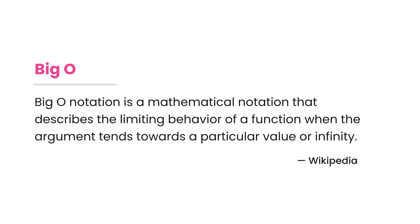So what is this big O all about? Well, let's start with the classic definition on Wikipedia. Big O notation is a mathematical notation that describes the limiting behavior of a function when the argument tends towards a particular value or infinity.